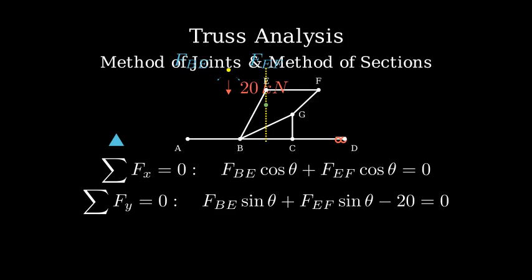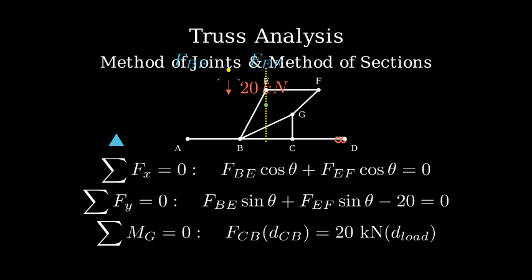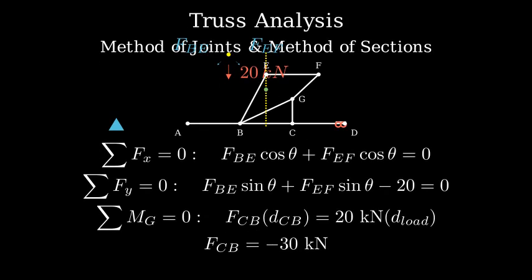The moment equation about G is: the force in CB times the perpendicular distance to point G equals the 20 kN load times its moment arm. Solving this equation, we find that the force in member CB is 30 kN compression.